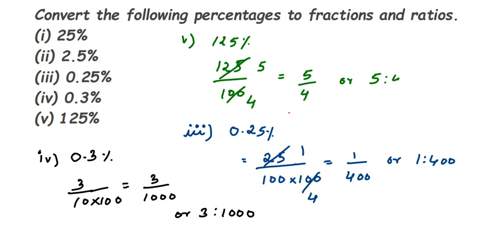Whenever they ask you to convert a percentage into a fraction or ratio: remove the percentage sign, divide by 100, and reduce it — you'll get the answer. If you have any other question from this chapter or any other chapter, drop a comment and I'll try to make a video on it. Thank you so much for watching.